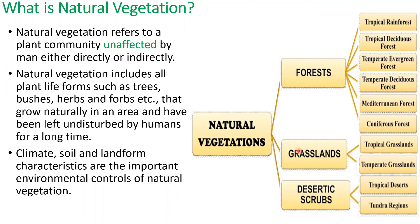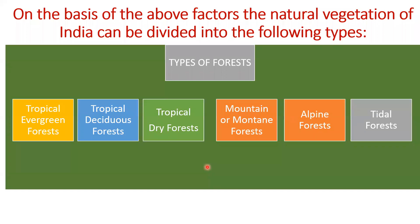Now let us see about the types of natural vegetation found in India. On the basis of climate, temperature, rainfall, and landform, the natural vegetation of India can be divided into the following types: tropical evergreen forest, tropical deciduous forest, tropical dry forest, mountain or montane forest, alpine forest, and tidal forest.